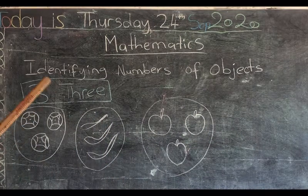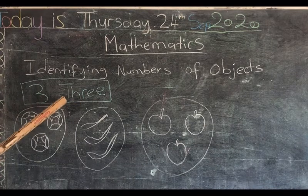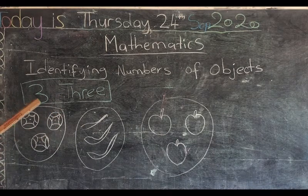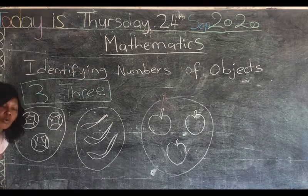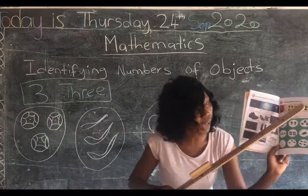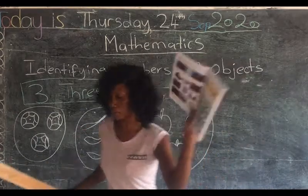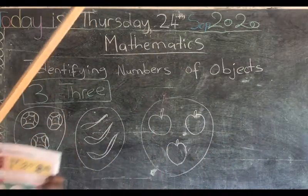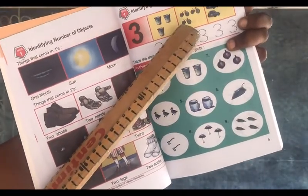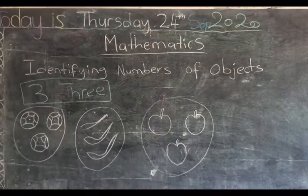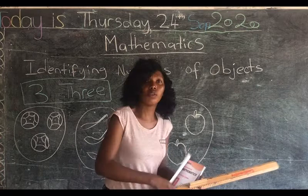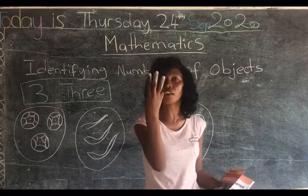But today we are going to look at number three — that's T-H-R-E-E, 3. You know we have a tricycle; for example, a tricycle has three tires, three wheels. We have number three — look at the fingers, these are three fingers.